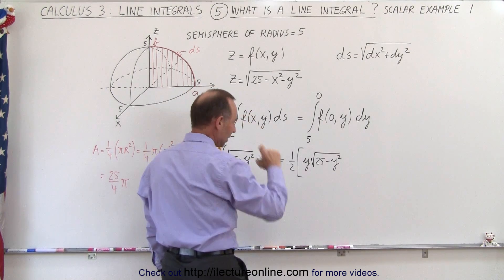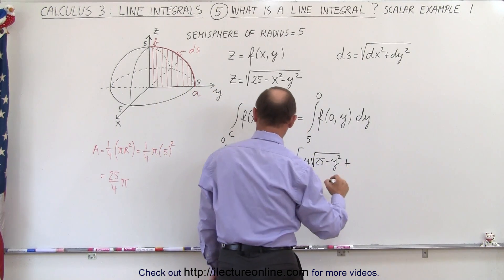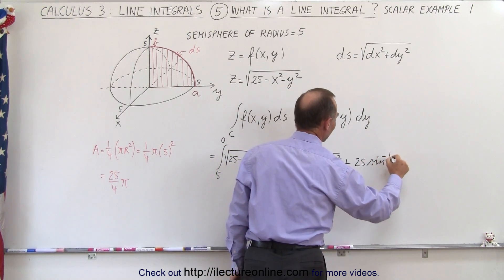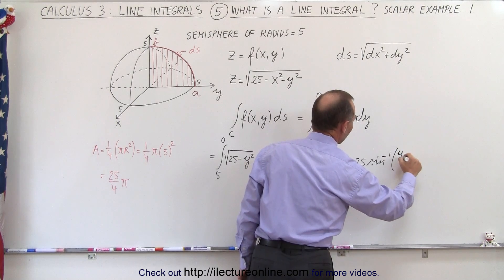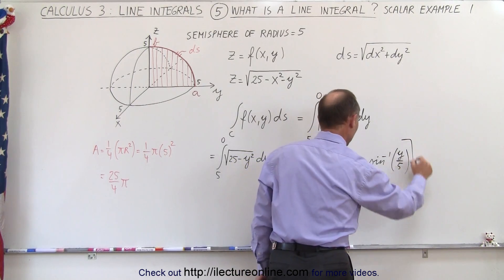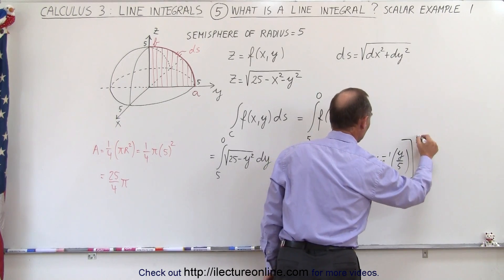And let's see here, that would be plus, let's see, that would be 25 times the inverse sine of y over 5. And then we evaluate that from 0 to 5.